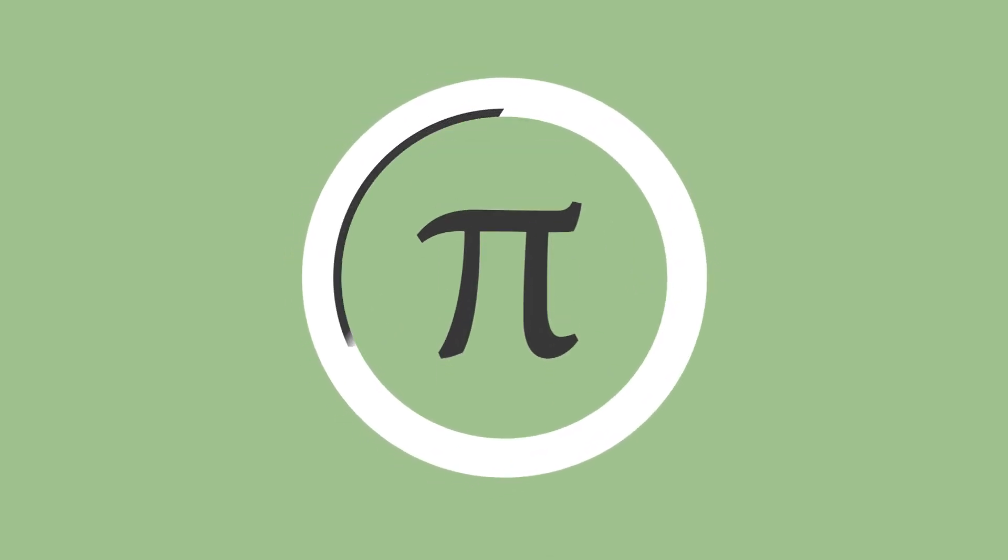Pi. You may know it as the ratio of a circle's diameter to its circumference, but there is so much more to this amazing number. To begin with, it has some quite interesting properties.